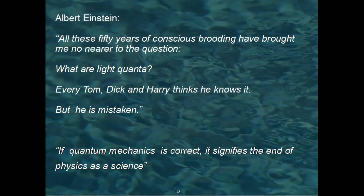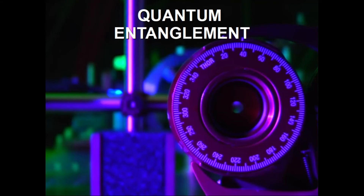The debate between Einstein and supporters of quantum physics — in particular Bohr, who was its spokesperson — lasted many decades. It was believed that the question could not be solved on a scientific level, and that it was therefore a question of subjective philosophical interpretations, a problem not pertaining to the scientific sphere. But then an unexpected event occurred which radically changed the scenario. To understand what happened, we need to introduce the concept of entanglement.